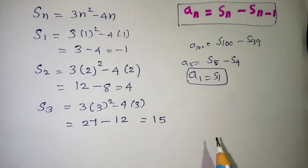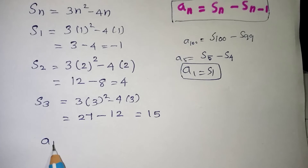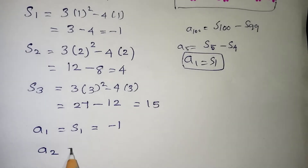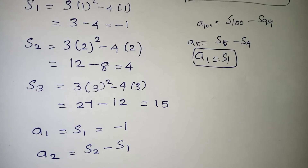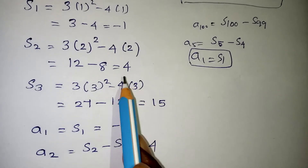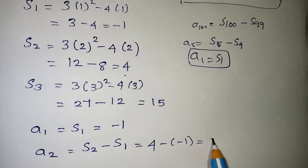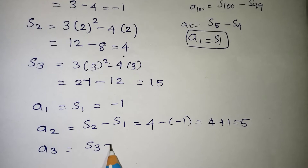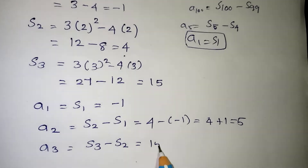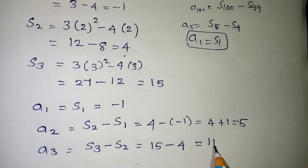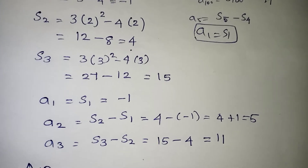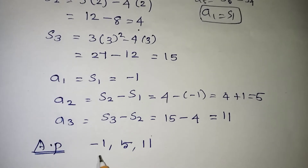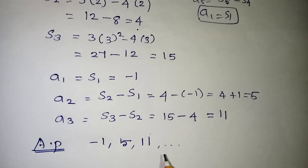Now find A1, A2, and A3. A1 = S1 = -1. A2 = S2 - S1 = 4 - (-1) = 5. A3 = S3 - S2 = 15 - 4 = 11. So the AP is -1, 5, 11, ... with a common difference of +6. This is the required AP.